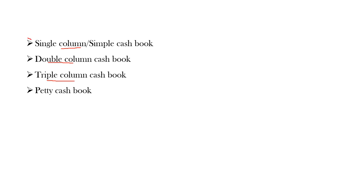A single column cash book will be maintained by organizations which have all their transactions in cash, or where the majority of their transactions are cash transactions. In a single column cash book, there will be only one amount column in the debit side and in the credit side.